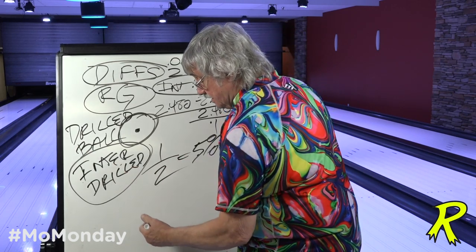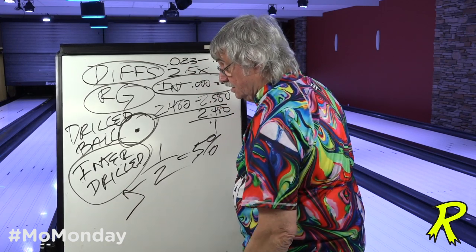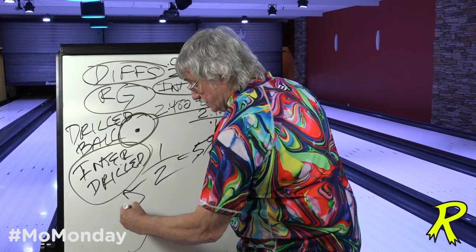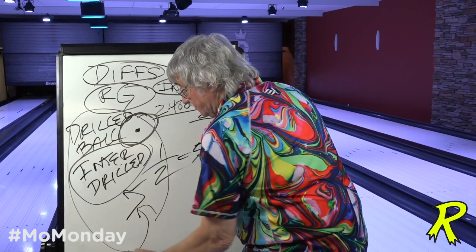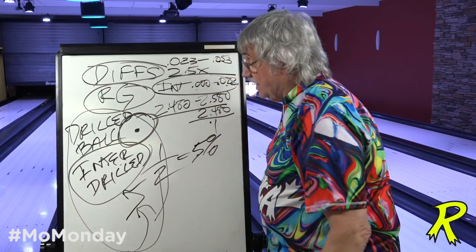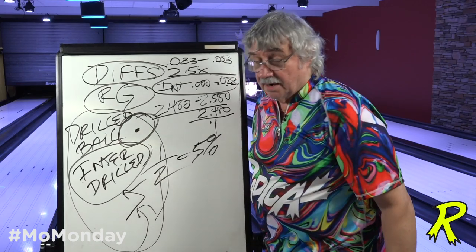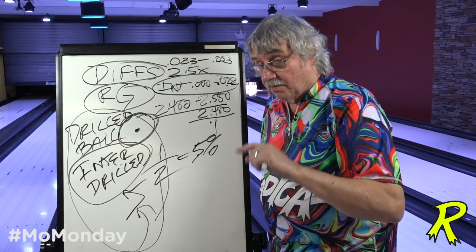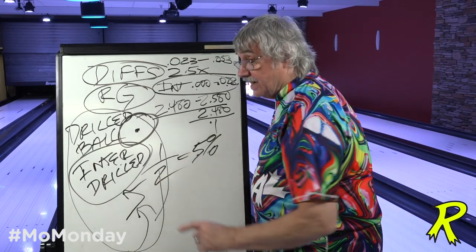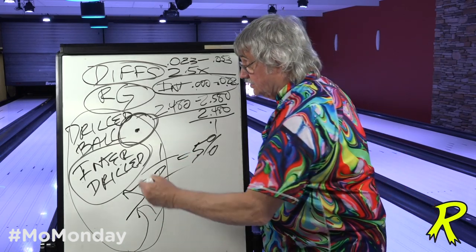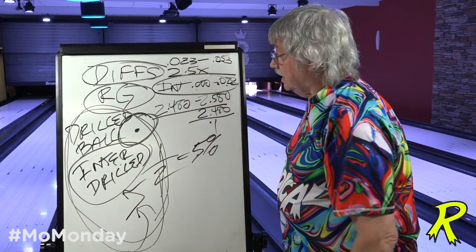The higher the intermediate diff of the drilled ball, the sharper the break point potential. The lower the intermediate diff of the drilled ball, the smoother the motion potential. Our drilling instructions always list the drilled numbers with any ball for the layouts we recommend — and last time I checked, we were the only ones doing it. So the intermediate diff of the drilled ball is the number you're really interested in.